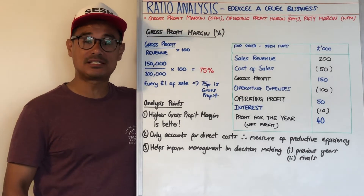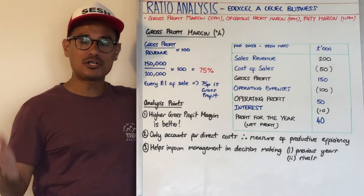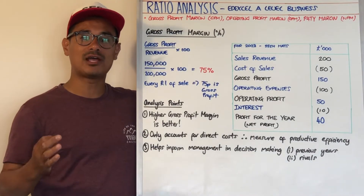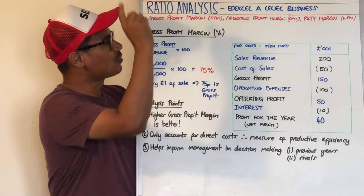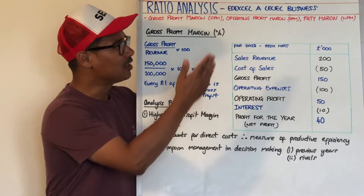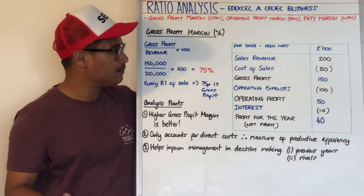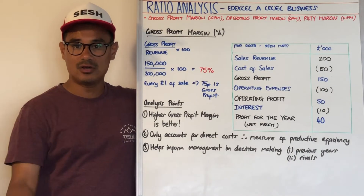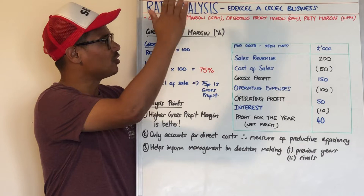Let's have a session on ratio analysis, specifically for Edexcel A-level business. When doing ratio analysis, you'll be looking at the statement of comprehensive income. There you'll be able to calculate the various ratios: gross profit margin (GPM), operating profit margin (OPM), and profit for the year margin, which is basically the net profit margin — two different names.